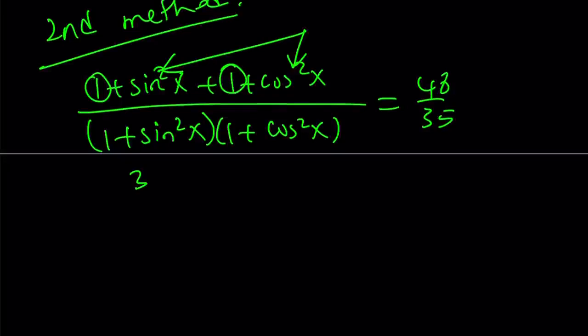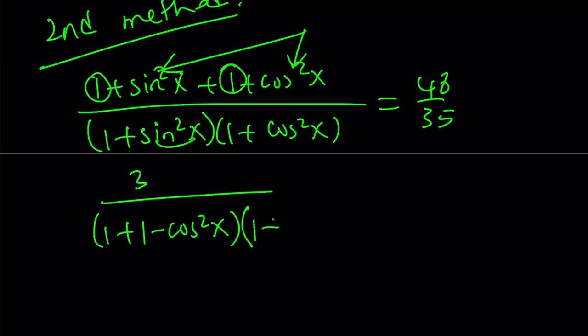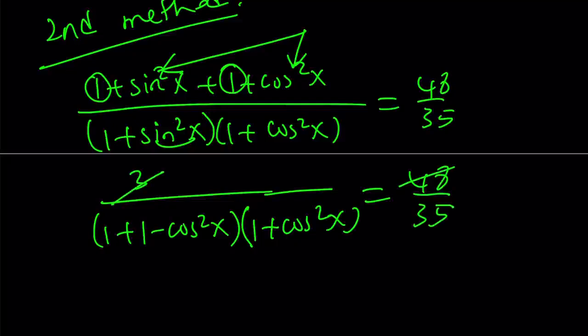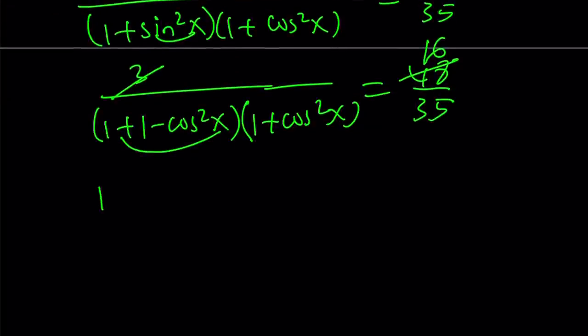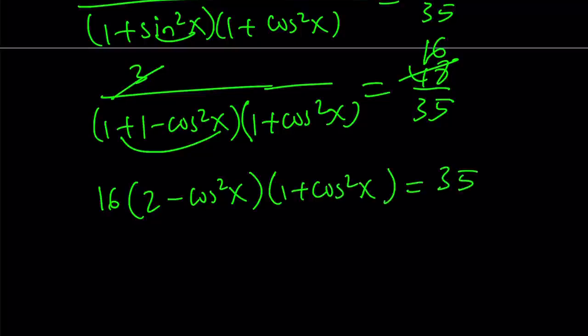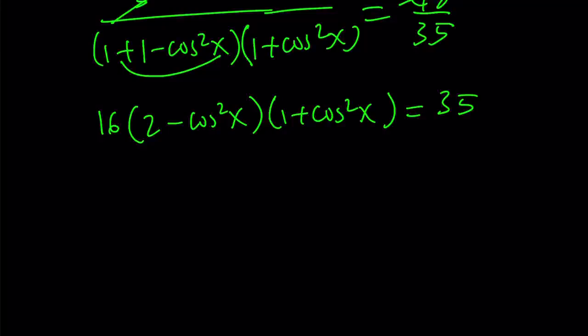Great. So this gives us 3 over 1 plus sine squared times 1 plus cosine squared. But here's one thing I can do. I can replace sine squared with 1 minus cosine squared. Because I want to solve this equation for cosine. And I can do that. And now we can go ahead and cross multiply. This becomes a 16. And now here we get the following. If you cross multiply, you're going to get 16 times 2 minus cosine squared x times 1 plus cosine squared x equals 35.